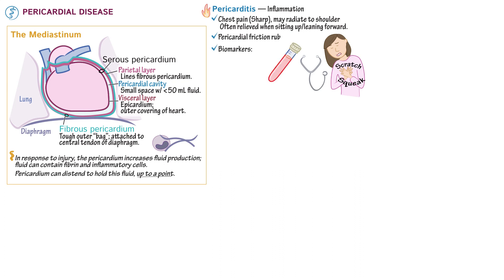Pericarditis is associated with the following elevated biomarkers: elevated white blood cell count, erythrocyte sedimentation rate (ESR), C-reactive protein (CRP), and in some cases cardiac troponin.